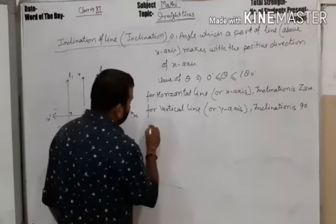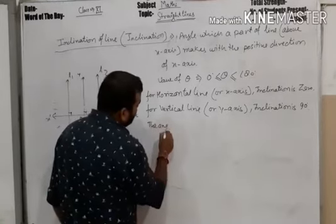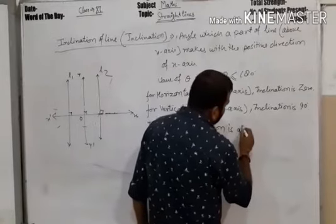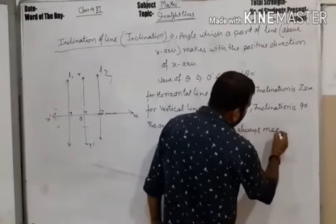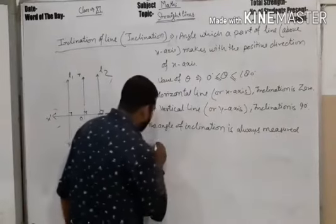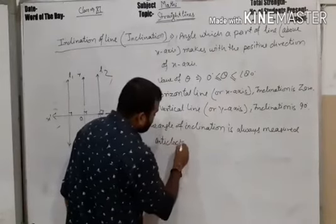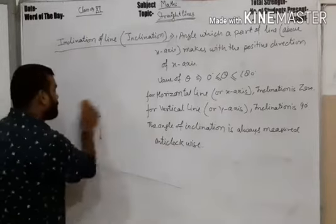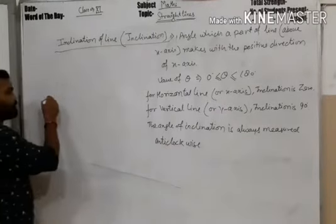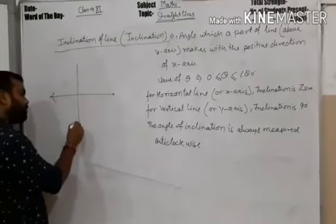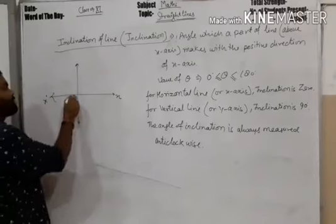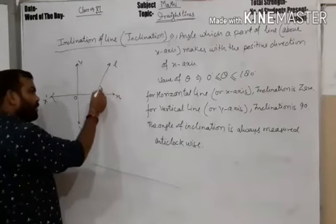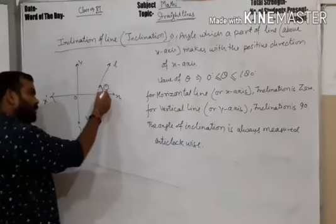This angle — that is, the angle of inclination — is always measured anti-clockwise. Suppose this is the coordinate axis x and y, and this is the line. The angle which it makes with the x-axis is to be measured anti-clockwise, not clockwise.